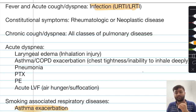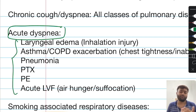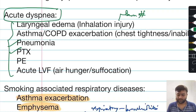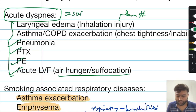Acute dyspnea has some very important specific differential diagnoses to keep in mind. These include laryngeal edema which can be due to inhalational injury seen in burn patients, asthma and COPD exacerbations, pneumonia, pneumothorax, pulmonary embolism, and acute left ventricular failure, which causes back pressure into the pulmonary circulation giving rise to a feeling of air hunger or suffocation.